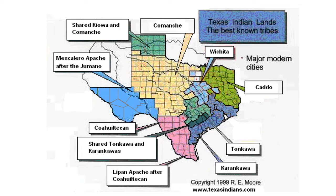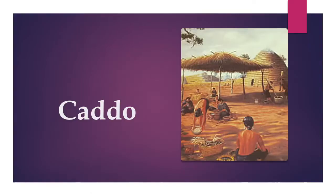This map shows the different Native American tribes that call Texas home. You can see that the Comanche was the main tribe in our area. The Cotto, meaning true chiefs, were a farming tribe who lived in tall cone-shaped grass huts that would hold several families. In addition to farming, they also hunted deer, turkey, rabbits, squirrel, and other small game animals that were local to the area.